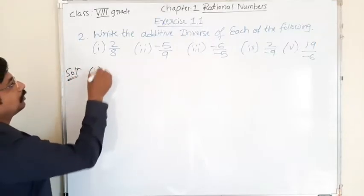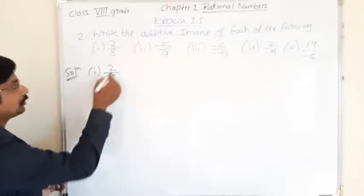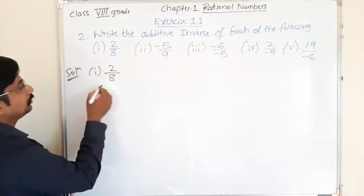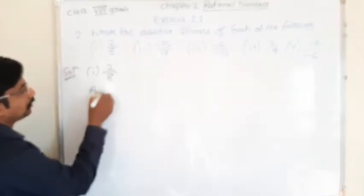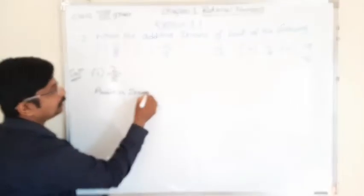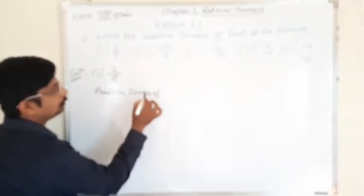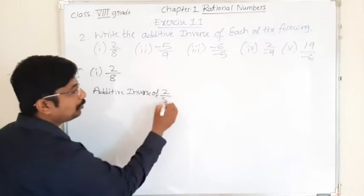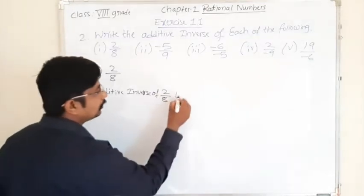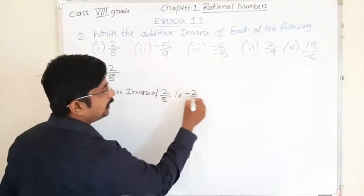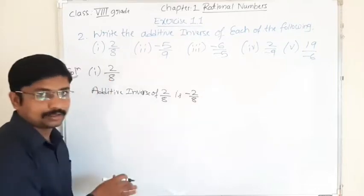Solution: 2 by 8. We have to write the additive inverse of 2 by 8. Additive inverse of 2 by 8 is minus 2 by 8. Why?